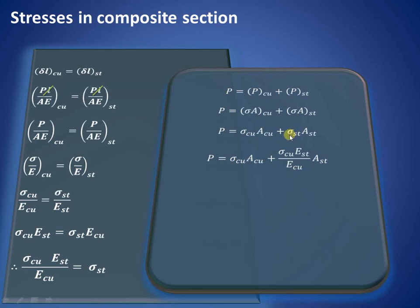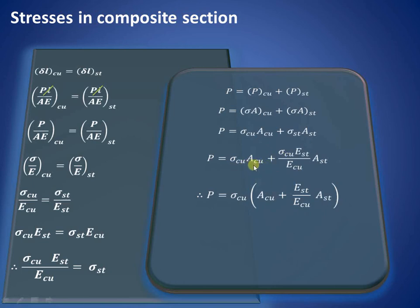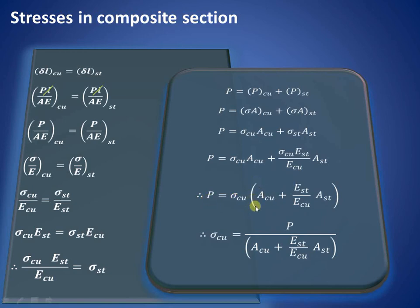Substituting the earlier expression for σ_St — which equals σ_Cu × (E_St / E_Cu) — into the load equation, and taking σ_Cu common, we get: P = σ_Cu × [A_Cu + (E_St / E_Cu) × A_St]. Therefore, the stress in the copper tube is σ_Cu = P / [A_Cu + (E_St / E_Cu) × A_St]. Once σ_Cu is known, we substitute it back to obtain σ_St. In this way we can find out the stresses in a composite section.